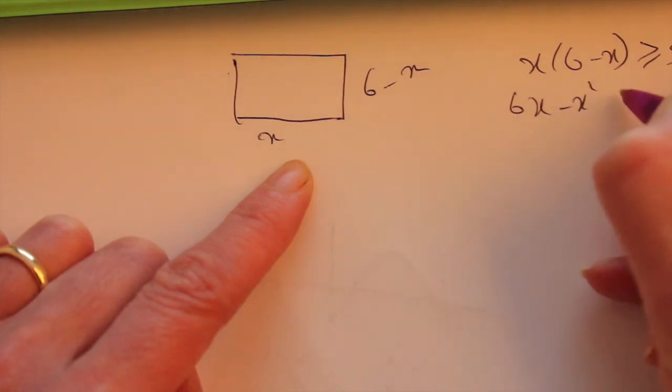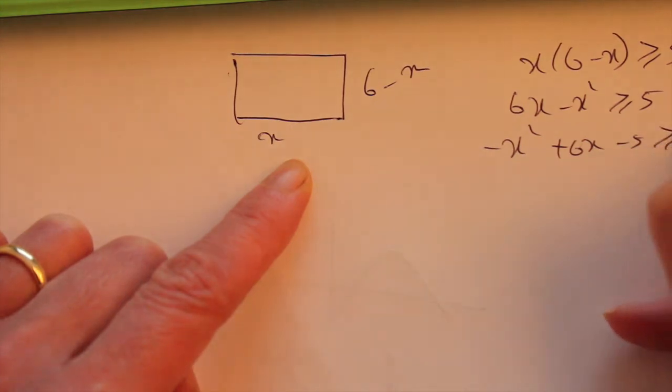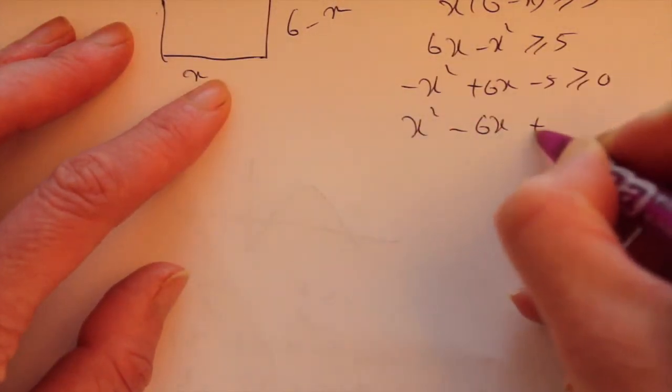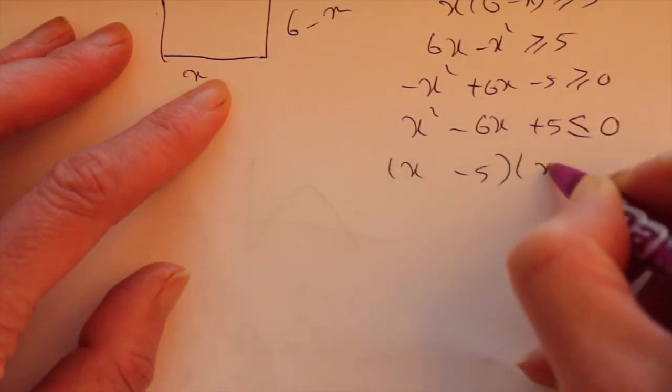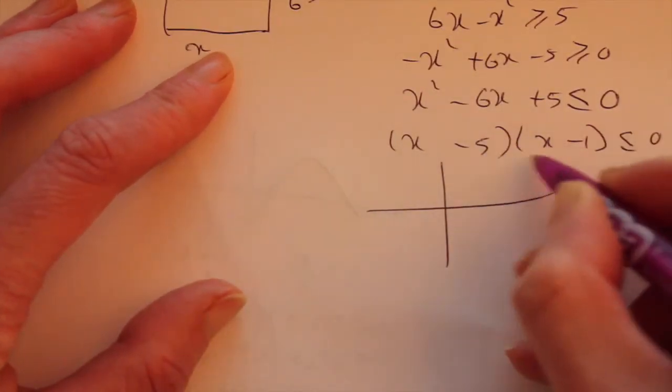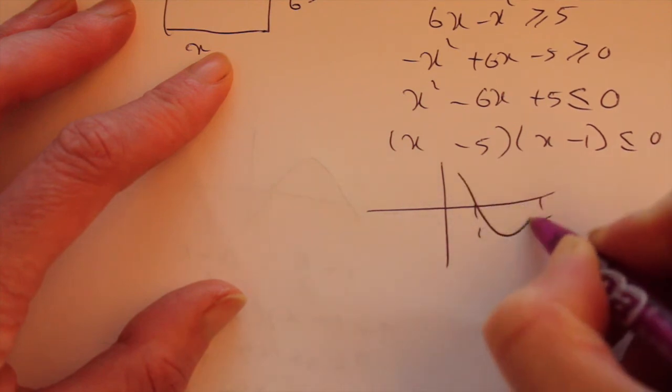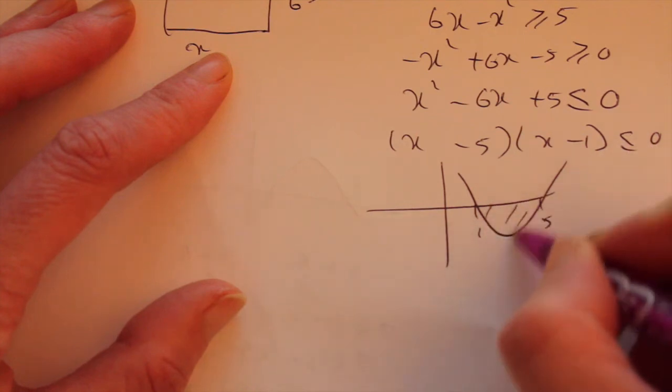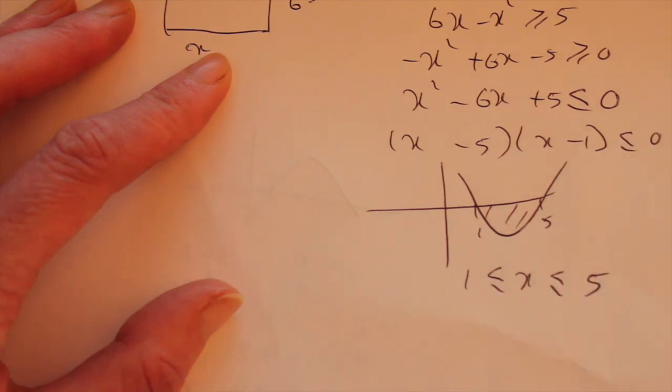Multiplying that out, 6x minus x squared greater than equal to 5. Everything on one side because it's a quadratic inequality. I would change all sides because you've got a negative x squared. It just makes it a little easier. Make sure you change your inequality as well. This one factorizes because minus 5 and minus 1 multiply to give 5 and add to give minus 6. Your critical values are 5 and 1. It's a u-shaped curve because it's positive x squared. You want beneath the axes. So your value of x is between 1 and 5.